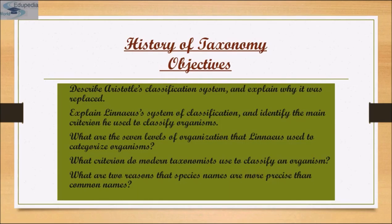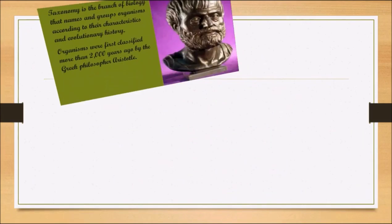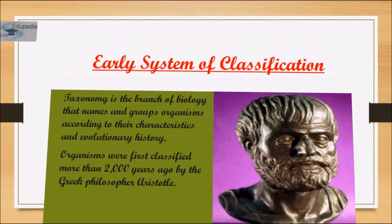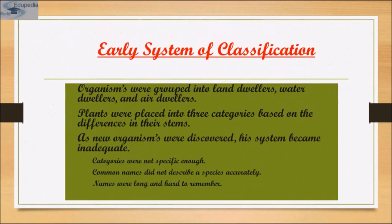We will be studying about Aristotle's classification system, which was a very early system of classification. He first classified organisms more than 2000 years ago. He grouped organisms into land dwellers, water dwellers and air dwellers. Plants were placed in three categories based on differences in their stems. As new organisms were discovered, his system became inadequate.